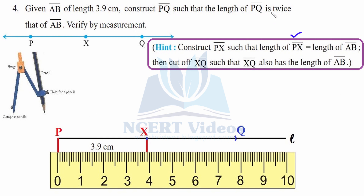We have achieved our aim of constructing PQ which is double of PX. You can check the total distance from P to Q — it is 7.8. When you multiply 3.9 by 2, or add 3.9 twice, you get 7.8. This is how you verify your measurement by adding and then checking on the ruler.